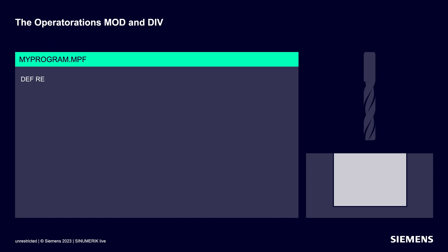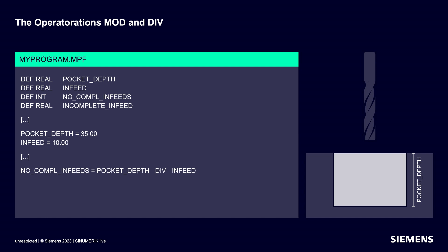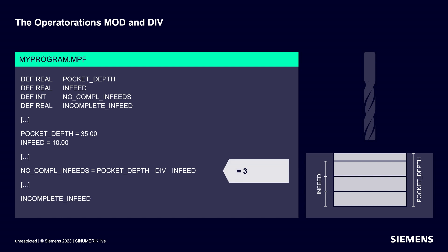First I define one floating-point variable for the depth and one for the desired infeed. Then another variable for the number of complete infeeds and one for the value of the incomplete infeed, that is, for the remainder. We assign values to the variables: 35 mm for the pocket depth and 10 mm for the infeed. The integer division then yields the number of complete infeeds — in our case 3. And with the modulo division you get the remainder, which is the value of the incomplete infeed — in our case, that's 5 mm.